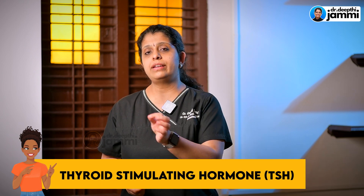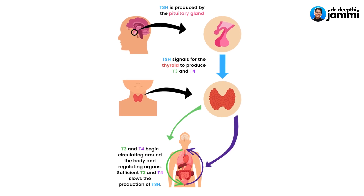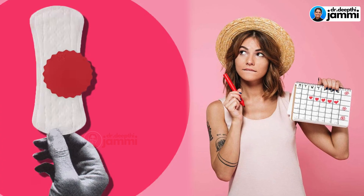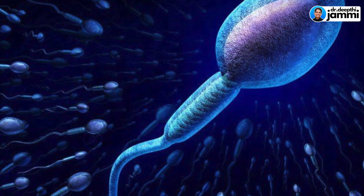The thyroid gland produces hormones — Free T3 and Free T4. In the brain, TSH (Thyroid Stimulating Hormone) acts as a signal to the thyroid gland to produce these hormones. This is important for ovulation and sperm production.